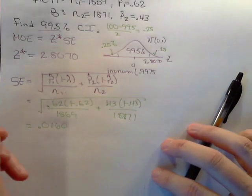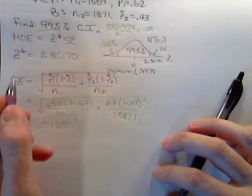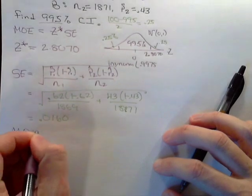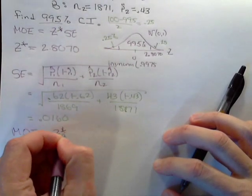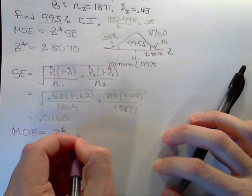So we are after the margin of error, which is the product of the two. The margin of error equals the critical value times the standard error.